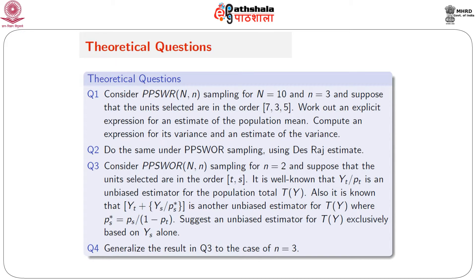Consider PPSWR sampling with N equals 10 and n equals 3, and suppose the units selected are in the order 7, 3, 5. Work out an explicit expression for an estimate of the population mean, and compute an expression for its variance and an estimate of the variance. Under with replacement sampling it is all straightforward. For recording and computation we note the units as 3, 5, and 7, with data y3, y5, y7.